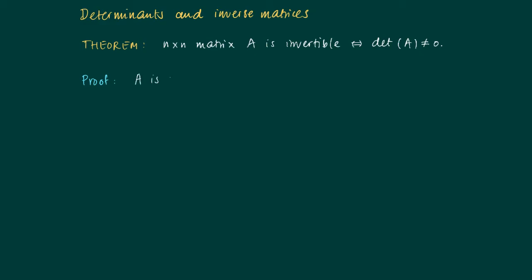For the proof of this statement, we know that A is invertible precisely when the reduced row echelon form of A is the identity matrix.